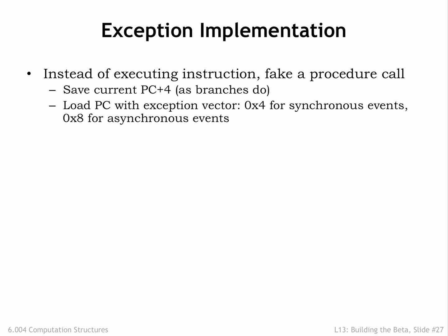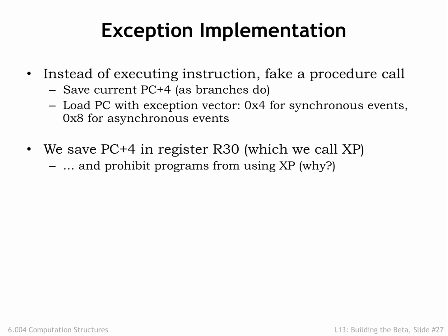Presumably the instructions in those locations will jump to the entry points of the appropriate handler routines. We'll save the PC+4 value of the interrupted program into R30, a register dedicated to that purpose — we'll call that register XP to remind ourselves of how we're using it. Since interrupts in particular can happen at any point during a program's execution, thus overwriting the contents of XP at any time, user programs can't use the XP register to hold values since those values might disappear at any moment.